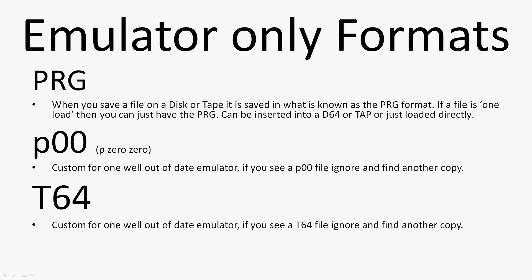Emulator-only formats. PRGs: when you save a file to a disk or tape it is saved in the PRG format. If a file is a one-load then you can just have the PRG — you don't need the image file around it, it's just a waste of space. But if you want, you can insert it into a D64 or TAP image, or just load it directly. The benefit is that because it doesn't have any known format overhead, the emulator can directly inject it into RAM instantly for instant load. P00 files are a custom format for an out-of-date emulator — basically just a PRG that also stores the original filename. If you see one, it's probably best to ignore it and find another version. Likewise, T64 is a tape-like format made for an old emulator — also obsolete; best to find another version if you can.